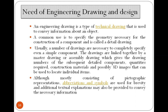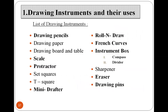Usually a number of drawings are necessary to completely specify even a simple component. The drawings are linked together by a master drawing or assembly drawing which gives the drawing number of the subsequent detail components, quantities required, construction material. In pictographic representation, abbreviations and symbols are used for brevity, and additional textual explanation may also be included to convey the necessary information. That is why it is necessary to study engineering drawing.